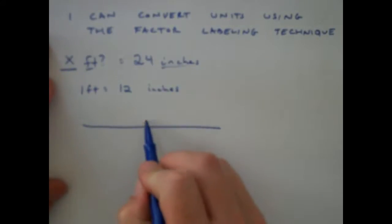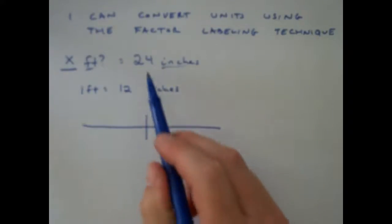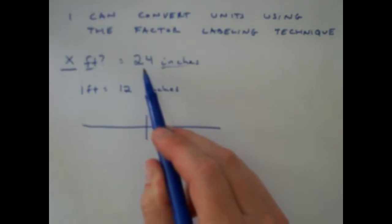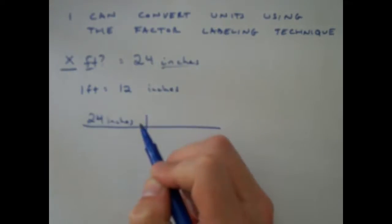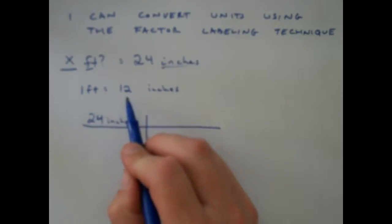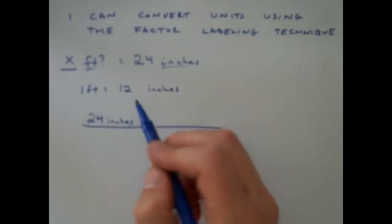Next step is I'm going to set up my fence. To set up my fence, I just start with a line and I start with whatever they give me on top. So I can start with the 24 inches and I can use my conversion of one foot equals 12 inches. Here's the really cool part.